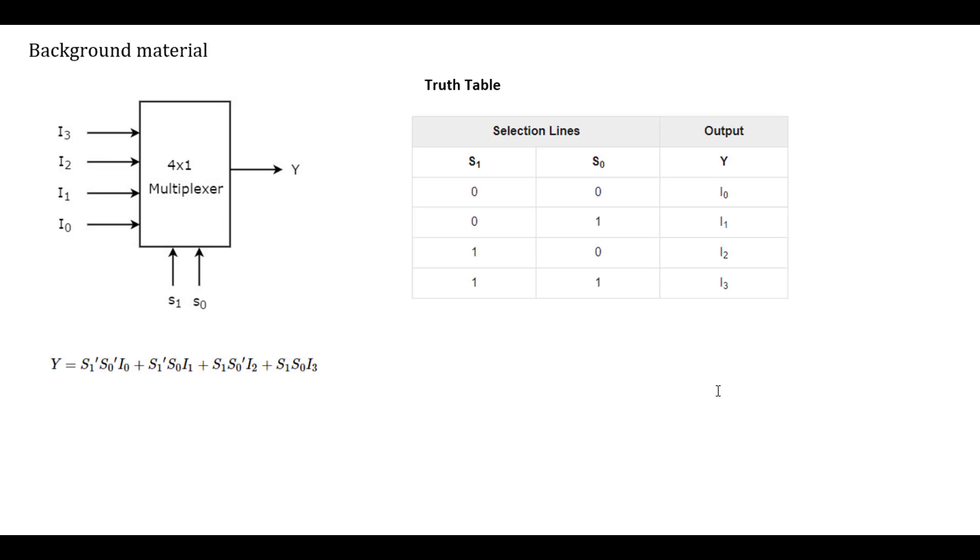A multiplexer selects any one of the inputs depending upon the selection input S1, S0. From this truth table, if the selection input is 0, 0, output Y selects input I0.